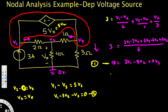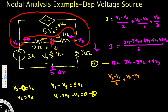We need one more equation since we have three unknowns. Let's apply KCL at node V2, assuming all currents are leaving. The equation is: (V2 − V1)/2 + (V2 − V3)/1 + V2/4 = 0.